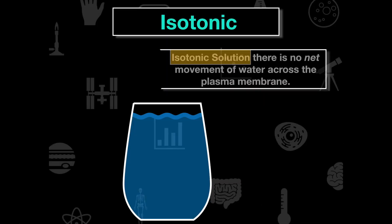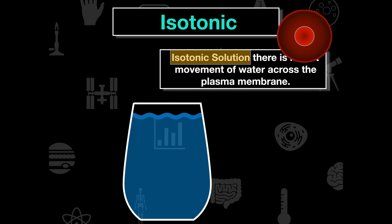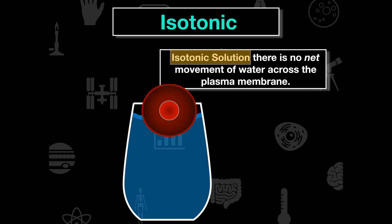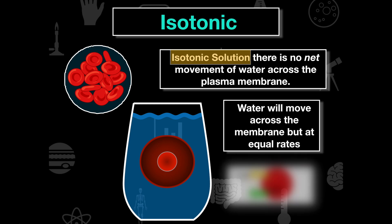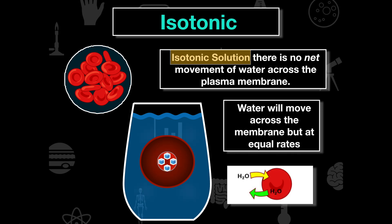In an isotonic solution, there is no net movement of water across the plasma membrane. Water is still moving across the membrane, but it's equal — for every one water molecule given, one water molecule is taken. This is because the ratio of water to salt is equal on both sides, and we get equal water exchange between the cell and its surrounding solution.